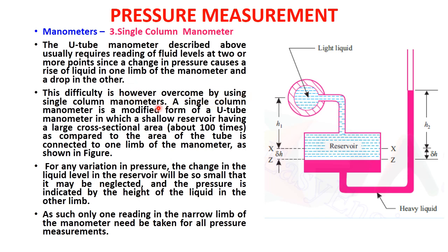The U-tube manometer usually requires reading fluid levels at two or more points, since a pressure change causes a rise in one limb and a drop in the other. This difficulty is overcome by using a single column manometer, which is a modified form of the U-tube manometer. A shallow reservoir with a large cross-sectional area — about 100 times the area of the tube — is connected to one limb. For any variation in pressure, the change in liquid level in the reservoir is so small it may be neglected.